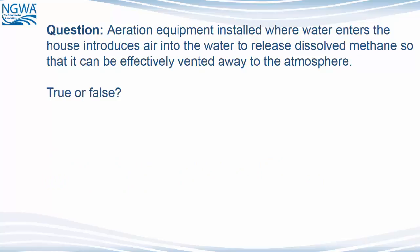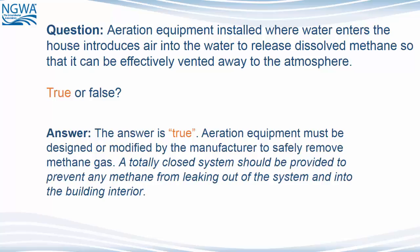Question: Aeration equipment installed where the water enters the house introduces air into the water to release dissolved methane so that it can be effectively vented away to the atmosphere. True or false? The answer is true. Aeration equipment must be designed or modified by the manufacturer to safely remove methane gas. A totally closed system should be provided to prevent any methane from leaking out of the system and into the building interior.